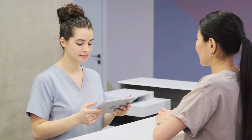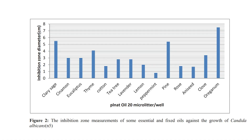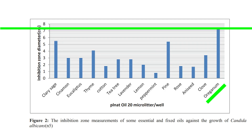Essential oils have proven antibacterial and antifungal properties. There are medical studies that use Candida albicans to test the inhibition abilities of different essential oils. They compared 14 different essential oils and fixed oils, and used the inhibition zone diameter to measure their ability to inhibit the growth of Candida albicans. The greater the inhibition zone diameter, the more powerful that oil is. Oregano essential oil has the best ability to prevent the growth of Candida albicans.